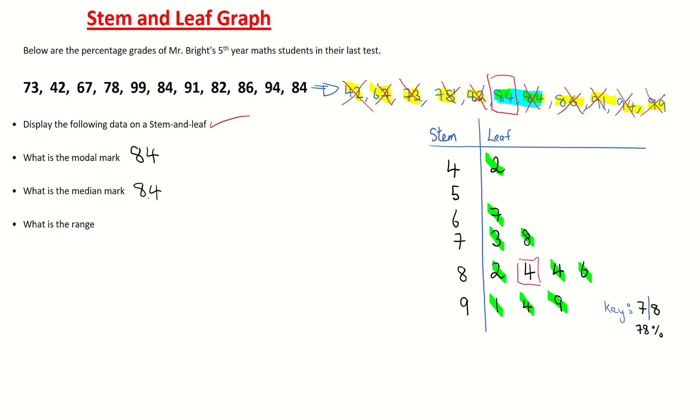The final part is asking us to find the range. The range is when we take the largest number and we go to the smallest number. So we can write it as 94 comma 42 - that's the interval. 99 down to 42. We can go 42 to 99, same thing. Or we can go 99 subtract 42 to actually get the range. And when we subtract 42 from 99 we get 57%. So the range there is 57. The modal mark is 84. The median mark is 84 also. And that's our stem and leaf.